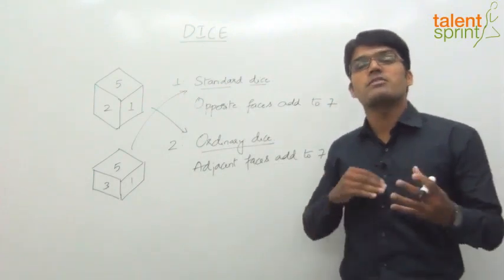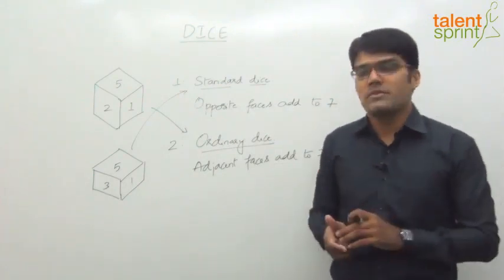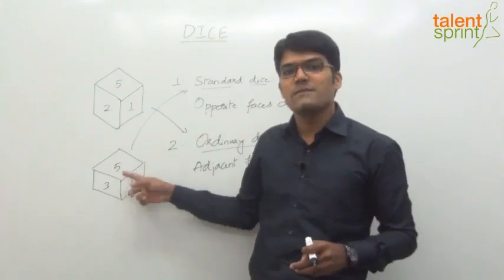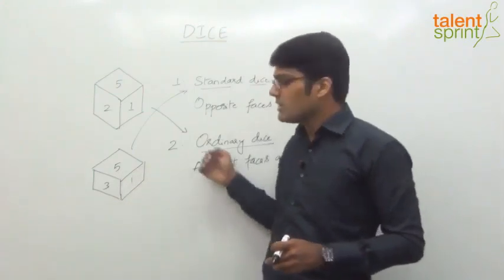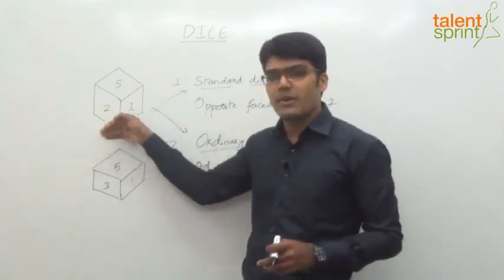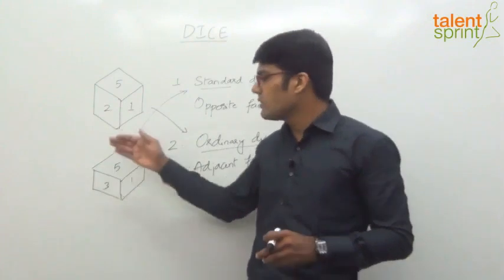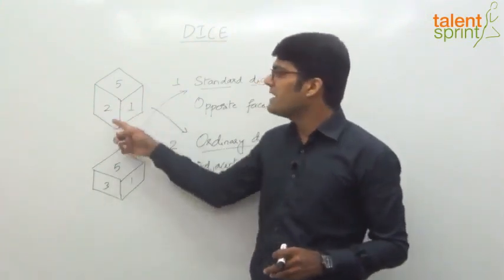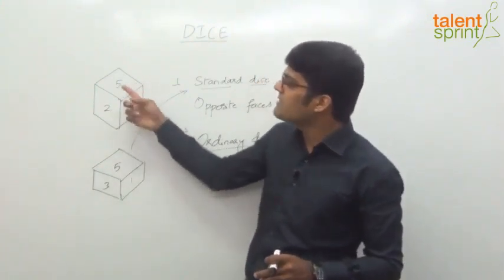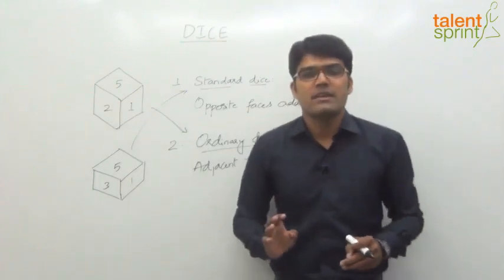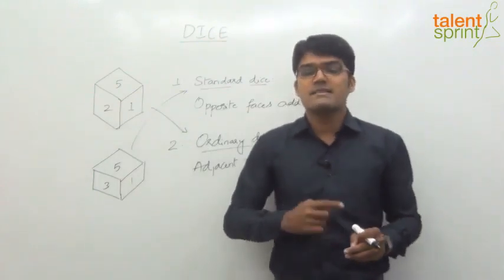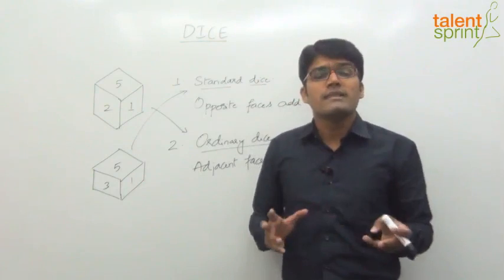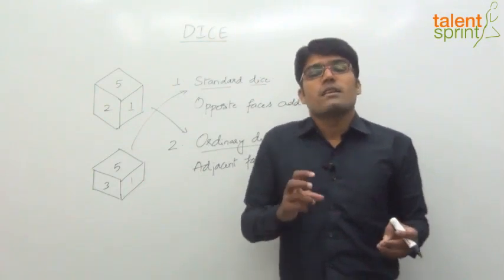A standard dice should have opposite faces adding to 7 — 5 on top, so at the bottom it should be 2; 5 plus 2 is 7. 1 is on this side, so on the other side it should be 6; 1 plus 6 is 7. 3 in front, so on the back it should be 4; 3 plus 4 is 7. Whereas in an ordinary dice, you will find that adjacent faces add to 7.